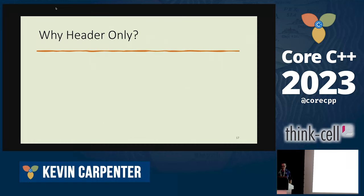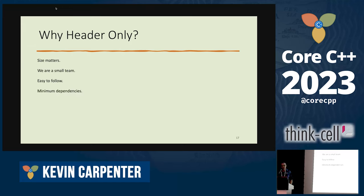Why header-only? Size matters. We have a small team, and pulling in all of Boost — not that Boost doesn't have great libraries, it's just big. We like small header-only things that are easy to follow, with minimal dependencies. It comes down to: can we maintain it ourselves? There's risk if an open source project stops being maintained — our team then has to be the ones maintaining that code.